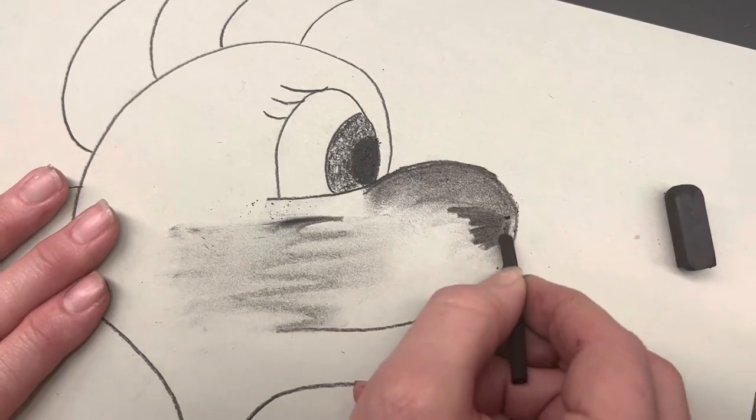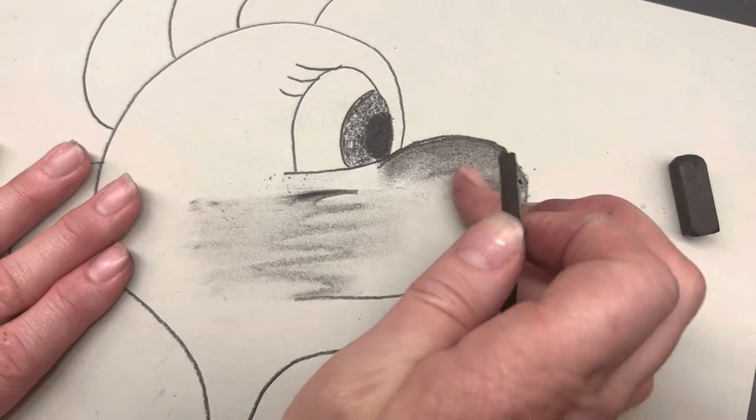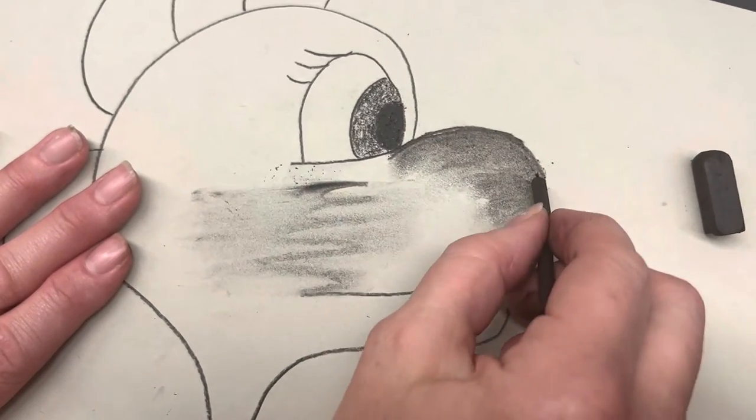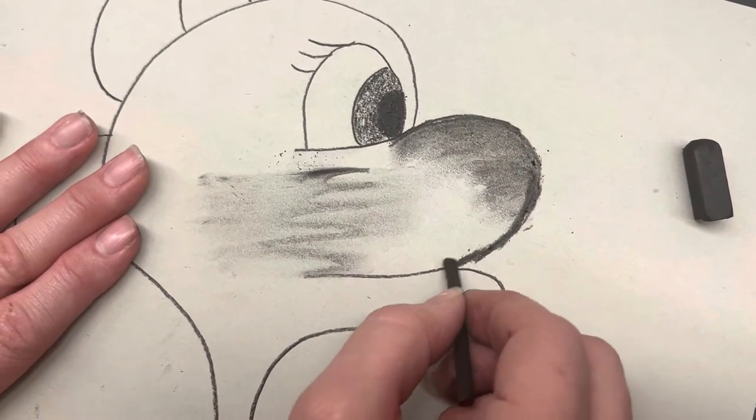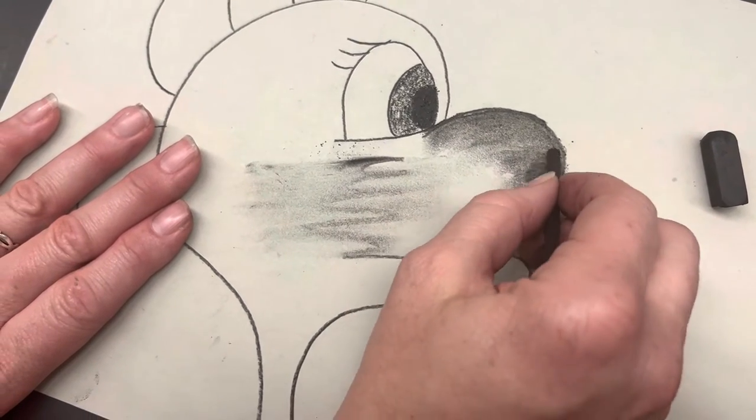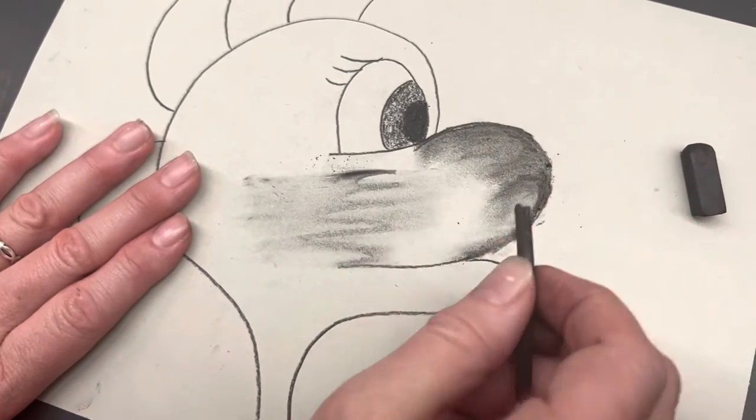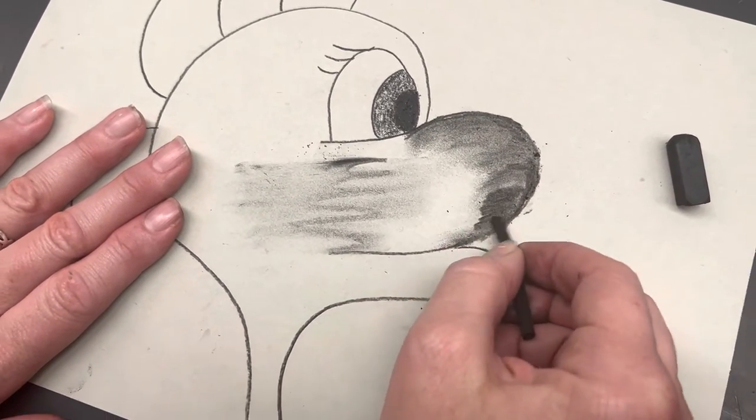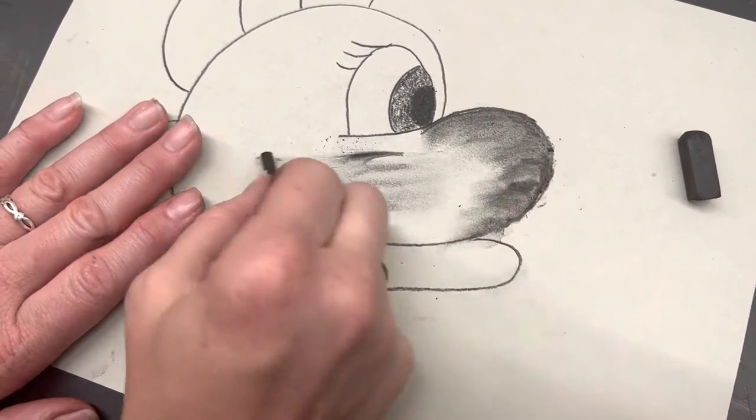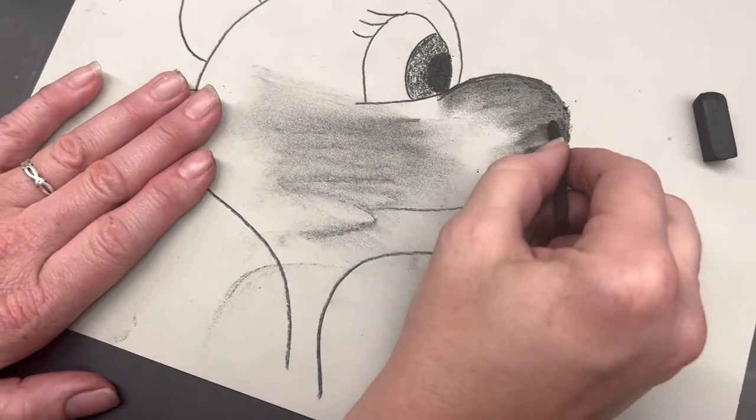And I'm just lightly touching the paper. I'm not grinding my finger into it. And I just want to keep adding charcoal until it's completely filled. Once again, you don't want to do this and then try to rub it in. That's not the way to use it.